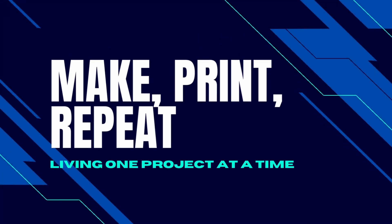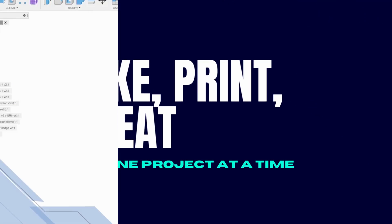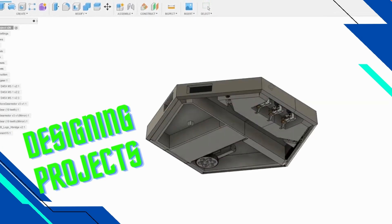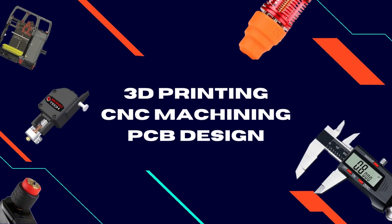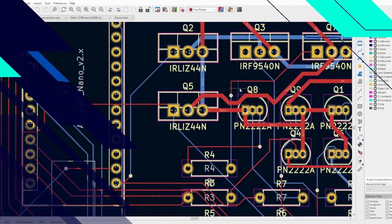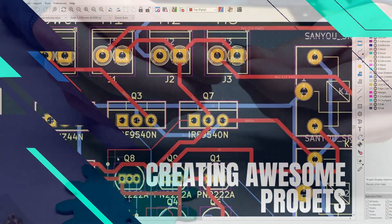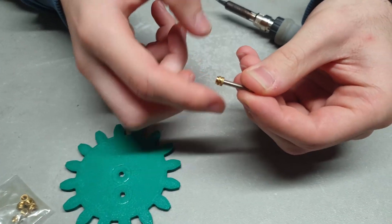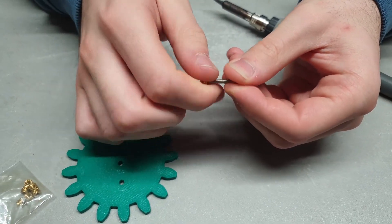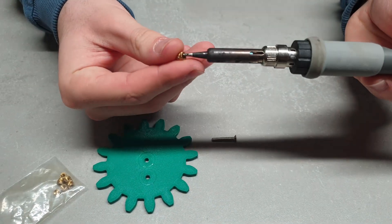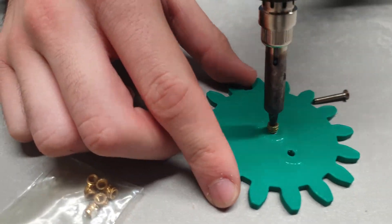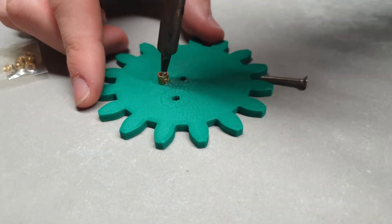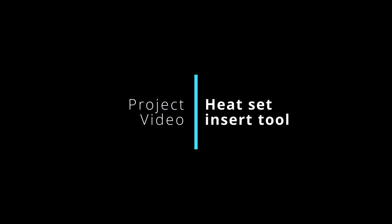Hi everyone and welcome back to a brand new video from Make Print Repeat. If you have ever worked on 3D printed projects, you know how valuable it is to use normal fasteners to secure the parts, and one of the best ways to do it is to use threaded inserts which make very strong connections. However, it is very difficult to align them vertically consistently, so that is why in this project we will try to fix that issue.